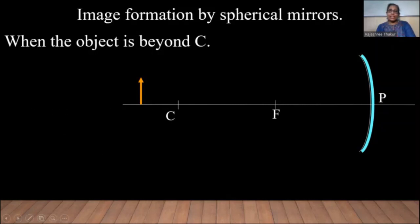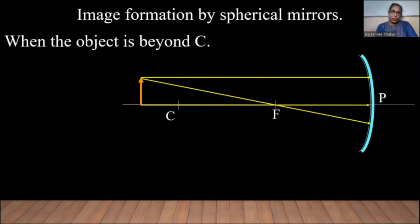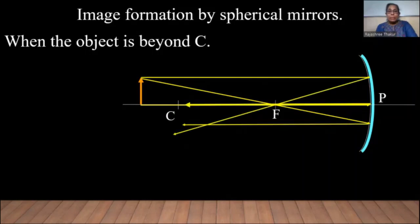Let us consider this object. Infinite number of rays come from every point of the object, but for convenience and to avoid confusion, let us take two rays coming from the point. When these rays are incident on the concave mirror, after reflection, they meet to form the image between F and C. You can see this is a real and inverted image, and also the size of the image is smaller — that is, diminished — than the object size.